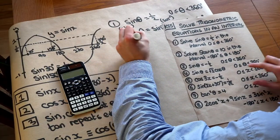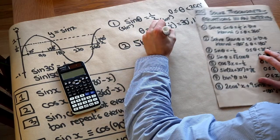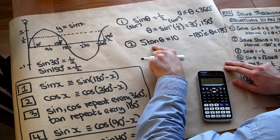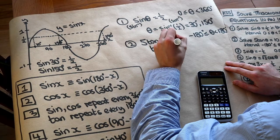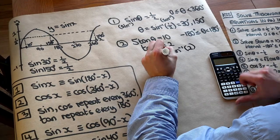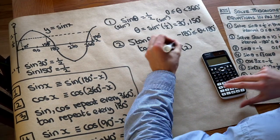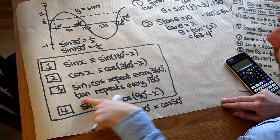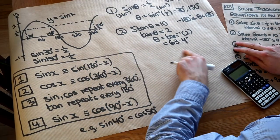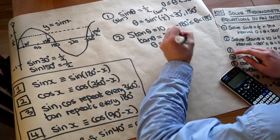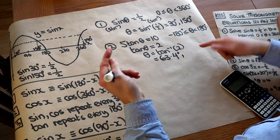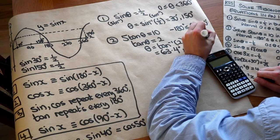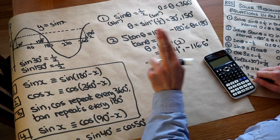For the second question, we want to solve 5 tan of theta equals 10, with theta between minus 180 and 180 degrees. We first divide by 5 to get tan of theta equals 2, then take inverse tan of 2, which gives 63.4 degrees. Since tan repeats every 180, we can add or subtract 180 to get other solutions. Adding 180 gives 243.4, which is outside the range. Subtracting 180 gives minus 116.6 degrees. Those are all our solutions — tan always has two solutions per 360 degrees.